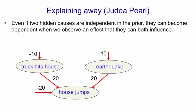Each of the causes is itself rather unlikely, but not nearly as unlikely as a house spontaneously jumping. So if you see the house jump, one plausible explanation is that a truck hit the house; a different plausible explanation is that it was an earthquake. Each of those has a probability of about e to the minus 10, whereas the house jumping spontaneously has a probability of about e to the minus 20. However, if you assume both hidden causes, that has a probability of e to the minus 20 — so that's extremely unlikely, even if the house did jump.